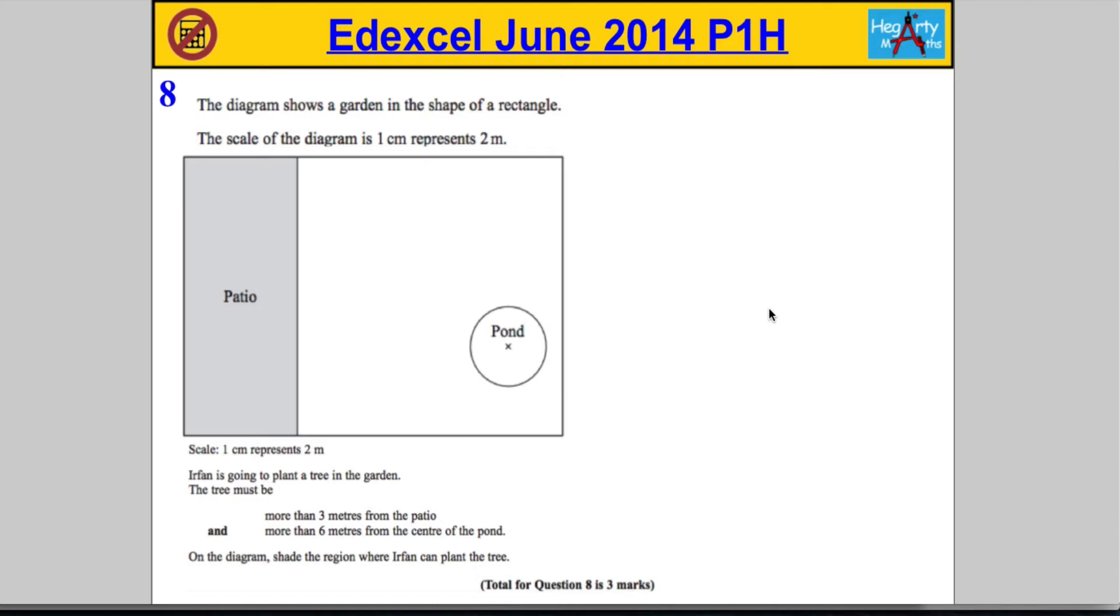The diagram shows a garden in the shape of a rectangle. The scale of the diagram is 1 centimeter represents 2 meters. Irfan is going to plant a tree in the garden, and the tree must be more than 3 meters from the patio and more than 6 meters from the center of the pond. We need to shade the region where Irfan can plant the tree.